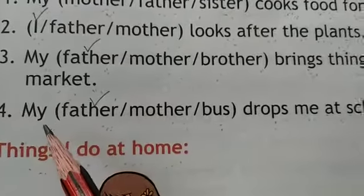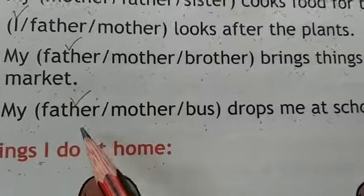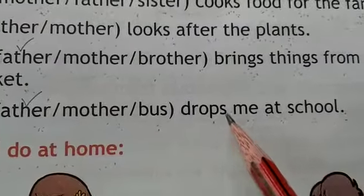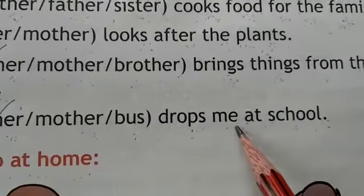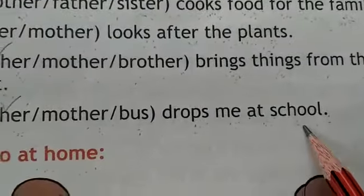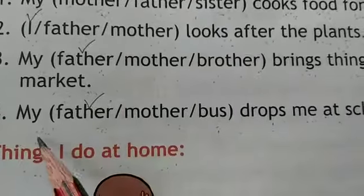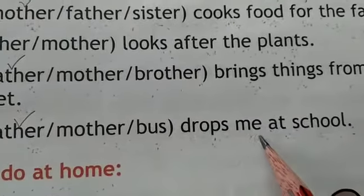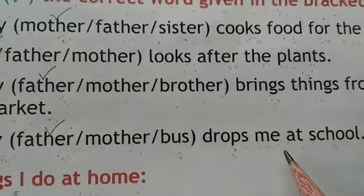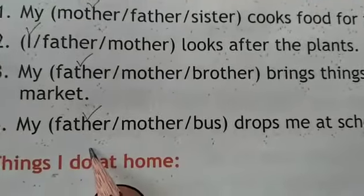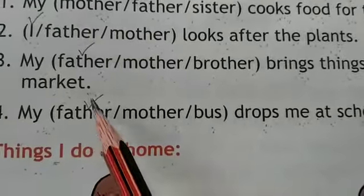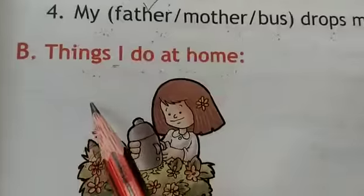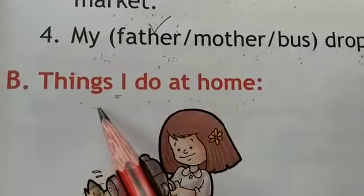Fourth: my — options are father, oblique mother, oblique boss — drops me at school. We will take father. My father drops me at school. School pe kaun chhor ke jaata hai — father. So yaha pe hum father pe tick karenge.